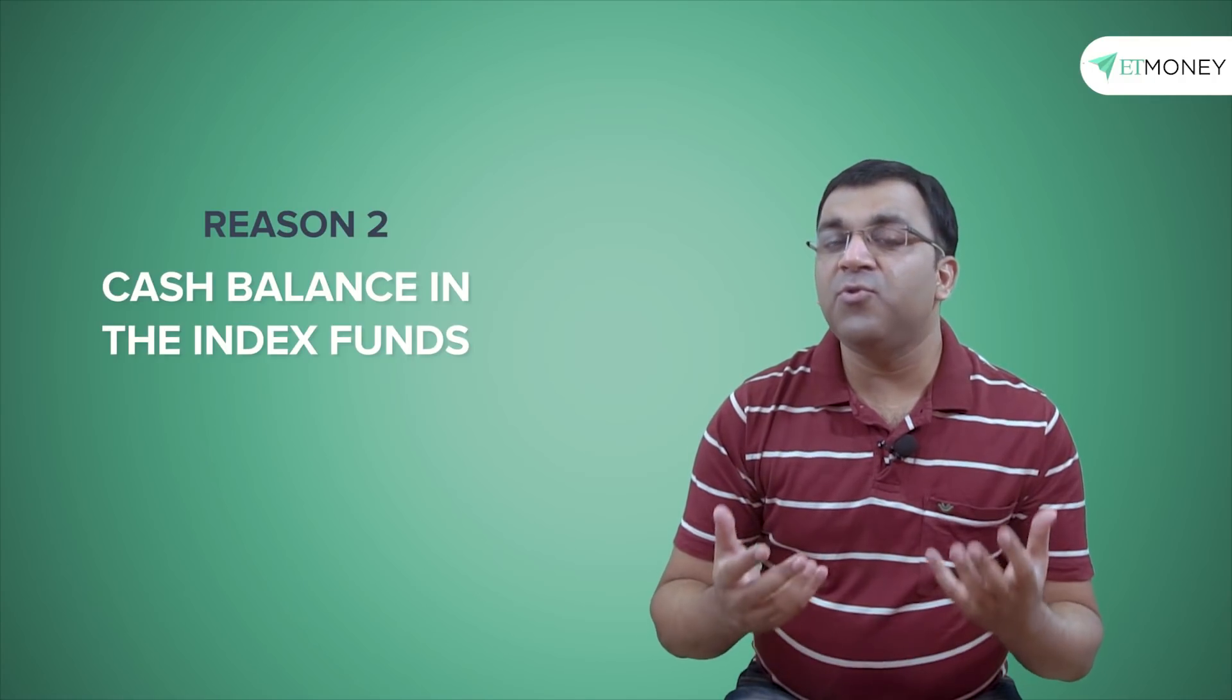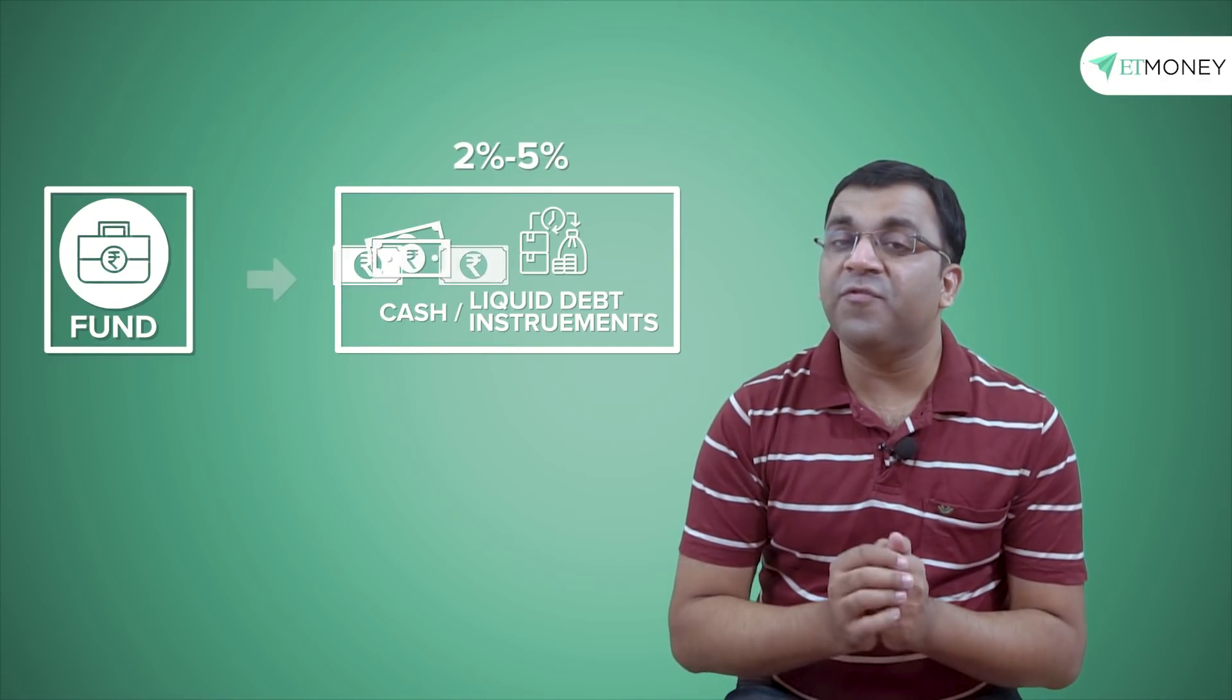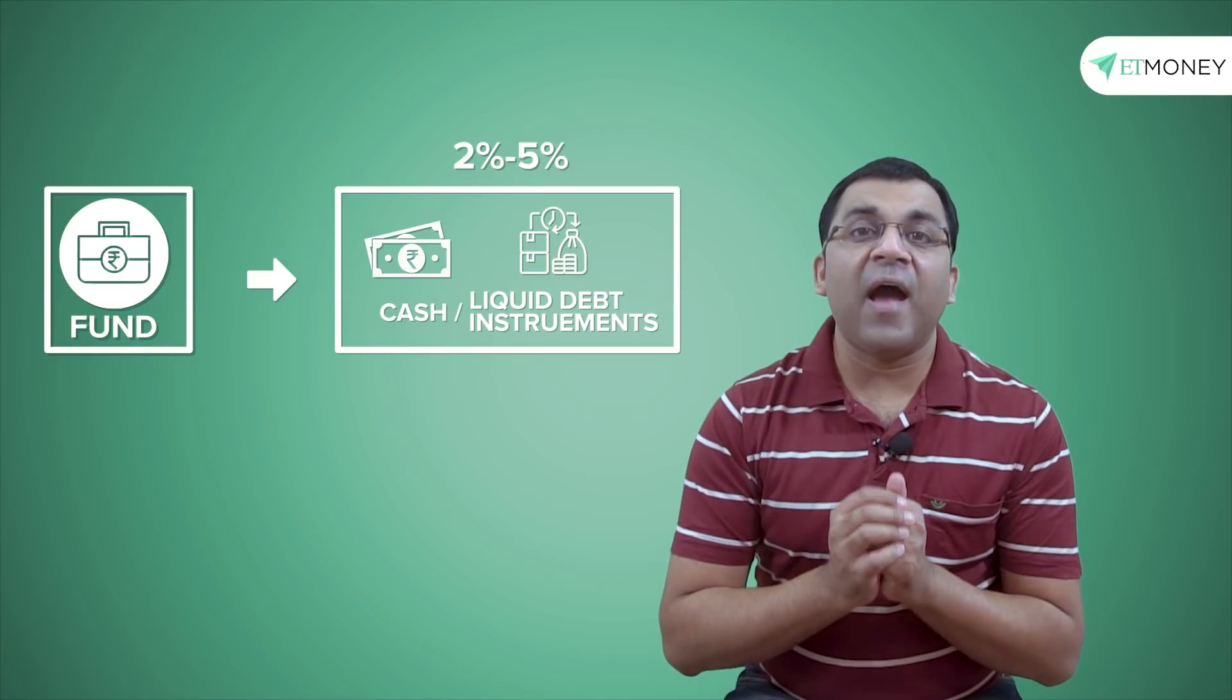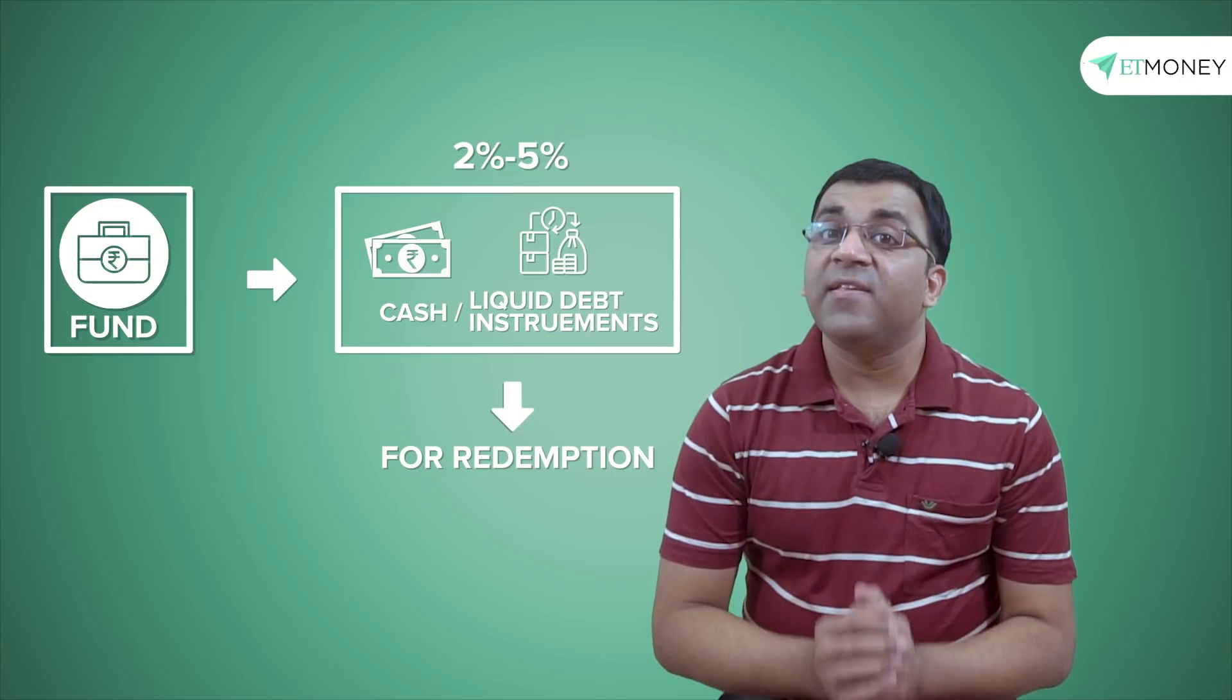A second reason which leads directly to the tracking error is the cash balance in the index funds. It is a known fact that most, if not all, mutual fund schemes are never 100% invested at any given time. What I mean is they leave aside anywhere from two to five percent in cash or highly liquid debt instruments that can then take care of redemptions. Likewise, any declaration of dividend or a sudden surge in investment inflows means there is more cash to work with, and the fund house is likely to take some more time to reinvest this money, which will then show up in the tracking error calculations.